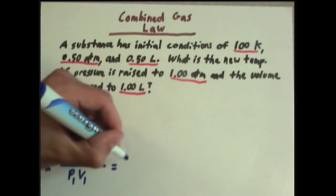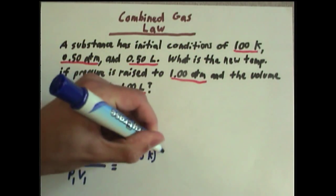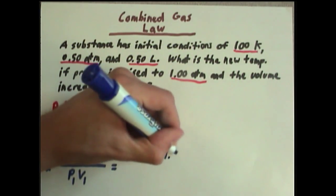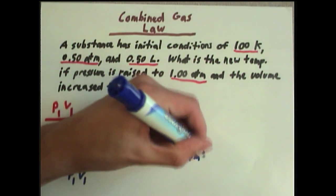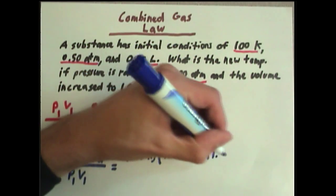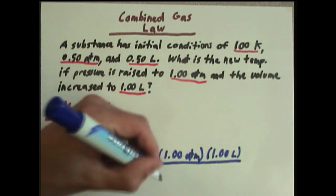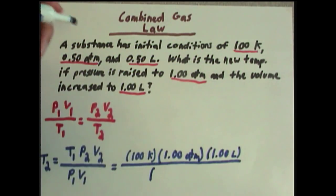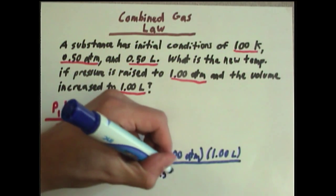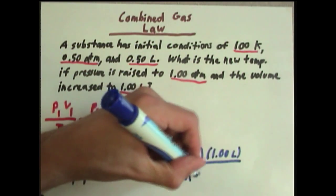T1 is 100 kelvins. P2 is our changed pressure, which is 1 atmosphere. V2 is our changed volume, which is 1 liter. And this is all divided by our initial pressure, which is 0.5 atmospheres, and our initial volume, which was 0.5 liters.